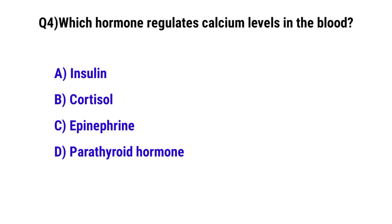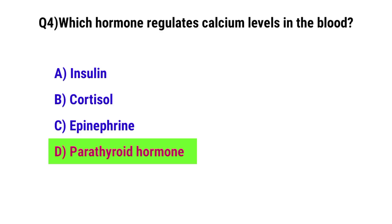Question number 4. Which hormone regulates calcium level in the blood? The correct option is D: Parathyroid hormone.